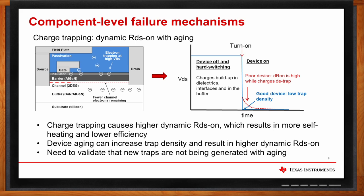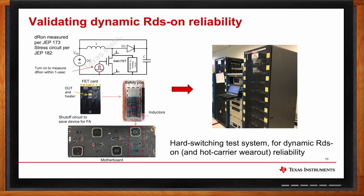How do you characterize and assure dynamic RDS-on reliability? We put together a measurement circuit based on JP-173 and provide the stress based on JP-182. Dynamic RDS-on is difficult to measure because by the time you take the device to a tester, the traps have all discharged — you need to measure it in-situ in a system while it's switching. We measure it within one microsecond after the turn-on event. We have a coupon card with the actual device, which we can heat up and switch, placed in a rack with safety infrastructure since this is a high-voltage test. Our hard-switching test system is able to characterize both dynamic RDS-on and hot carrier wearout reliability.